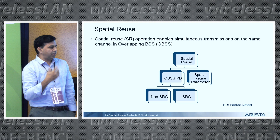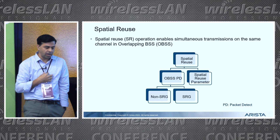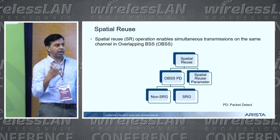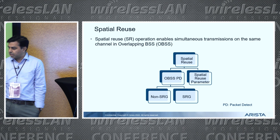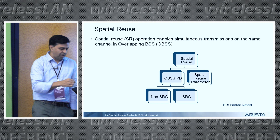As expected, IEEE gives you three different ways of solving the problem with 10 rules to figure out how to use this feature, and spatial reuse is no different. There are three flavors: something called OBSS packet detect, which we'll talk about in the next few slides; something called spatial reuse parameter, which is another way of doing it; and within the OBSS PD mechanism there are again two flavors — a non-spatial reuse group and a spatial reuse group.